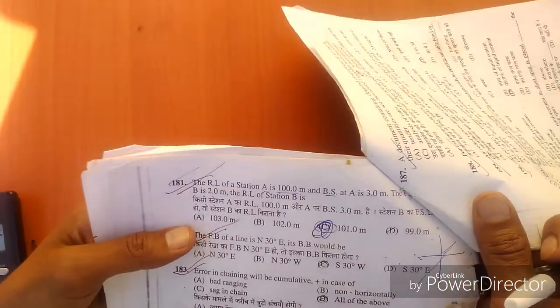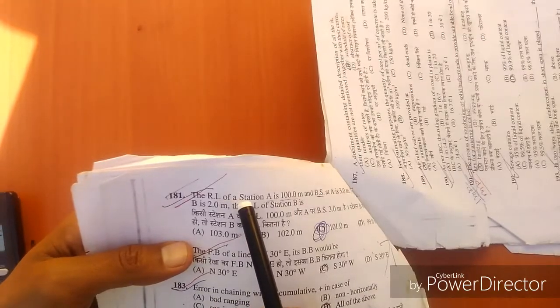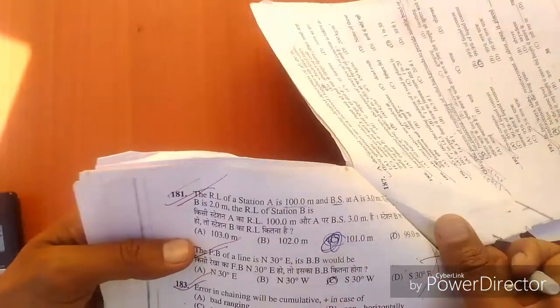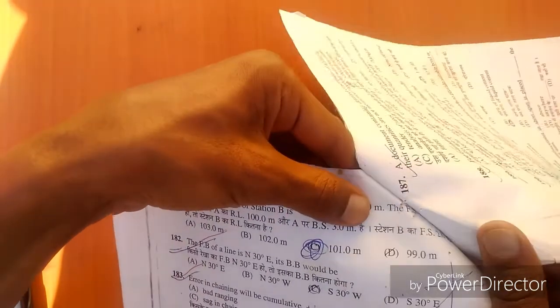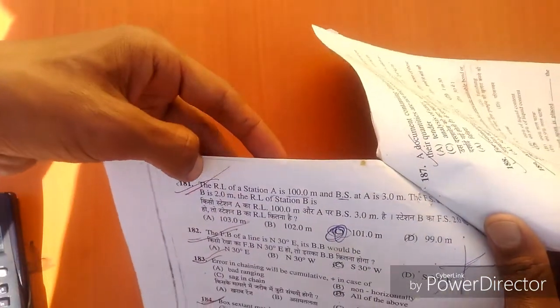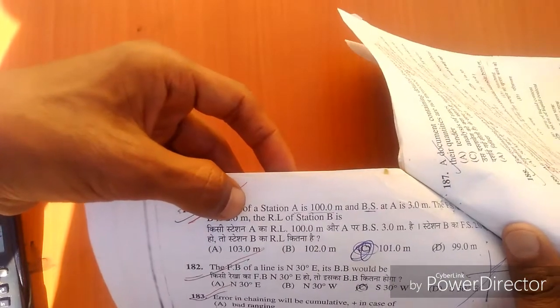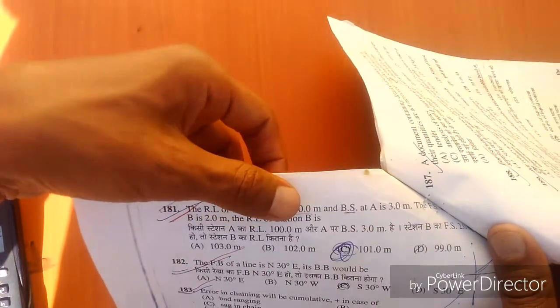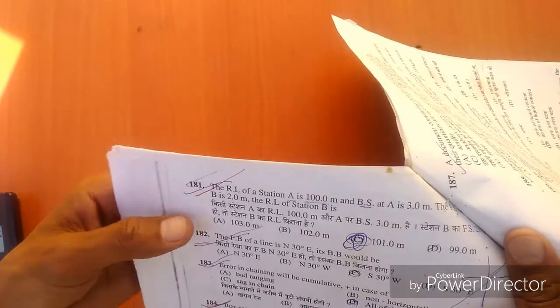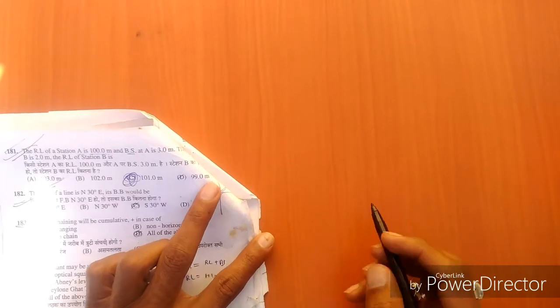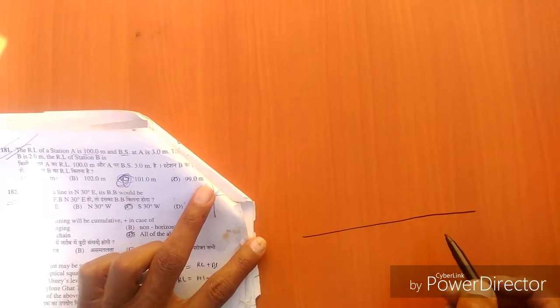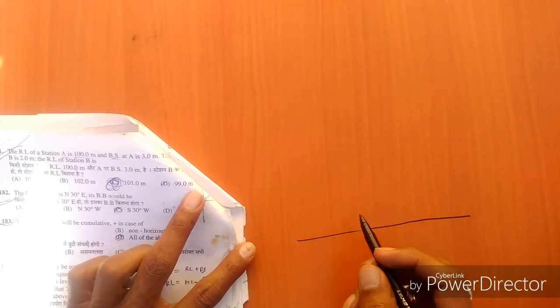Question number two: In surveying, the RL or reduced level of station A is 100 meters, and backsight at point A is 3 meters. The foresight at B is 2 meters. Find the RL of station B. This is our station.